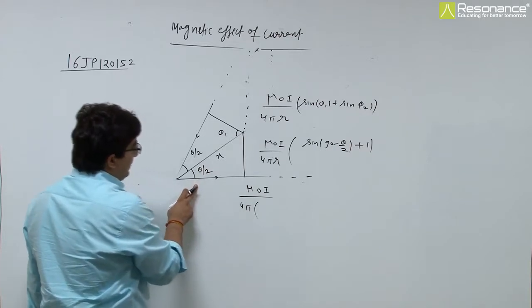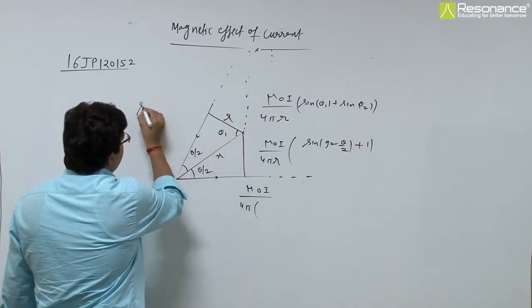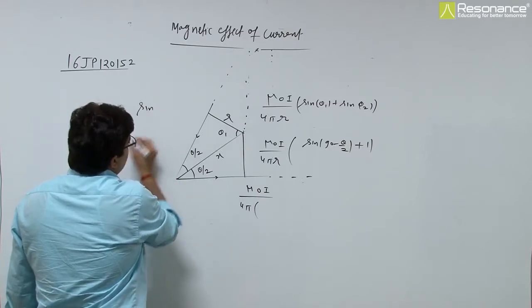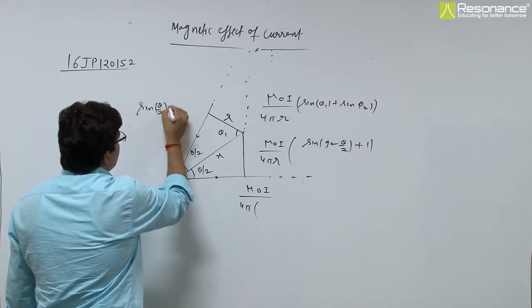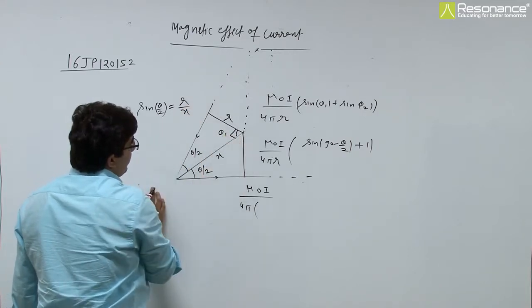r from here we can see what is r, this is r. So sin theta by 2, sin theta by 2 equals to r by x, because this is 90 degrees perpendicular.